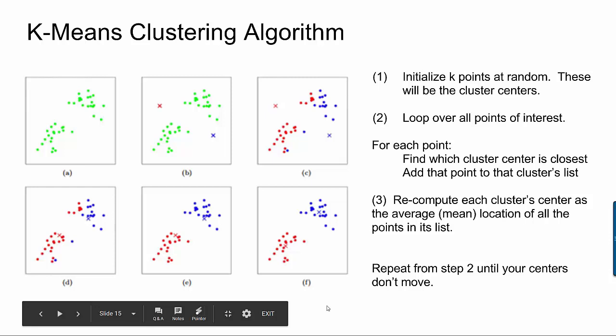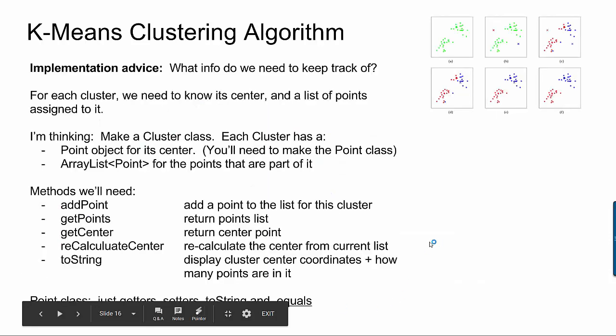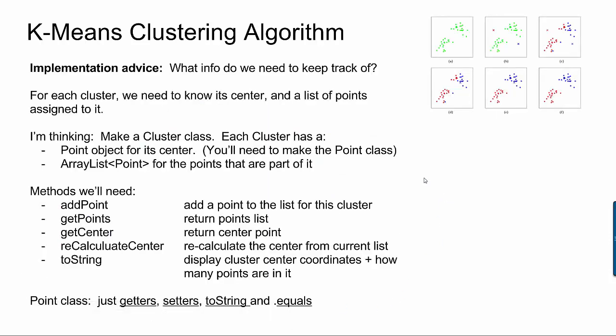All right. So let's talk implementational details. So whenever you're trying to implement an algorithm like I just described, you want to think what information do you need to keep track of? What are your data structures? And then as a second step, you can think how do they fit into your algorithm. So clearly we're going to need cluster objects. The information each cluster needs to know about itself: the cluster needs to know its own center and it needs a list of points that have been assigned to that cluster.